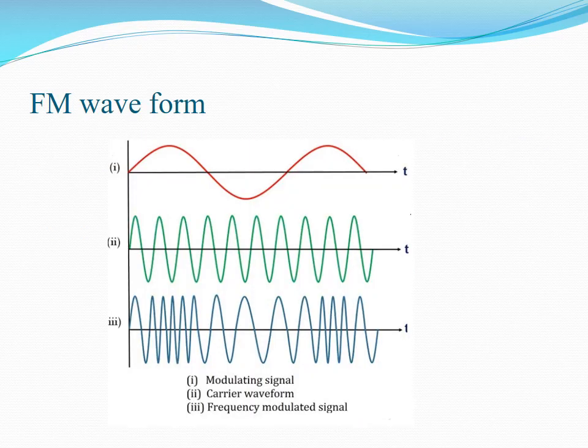Next, we see the FM waveform. First is the message signal, next one is the carrier signal, and the third one is the frequency modulated signal. The message signal is the low frequency signal and the carrier signal is the high frequency signal. In the message signal, during the positive cycle as the amplitude is increasing, the frequency of the carrier modulated signal is also increasing. And during the negative cycle, the frequency of the carrier is also decreasing. So we are getting the high frequency as well as the low frequency signal, and the frequency of the carrier wave is changing.